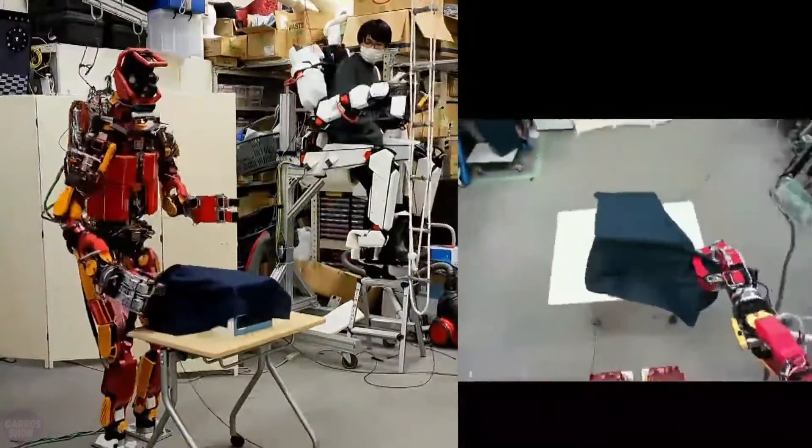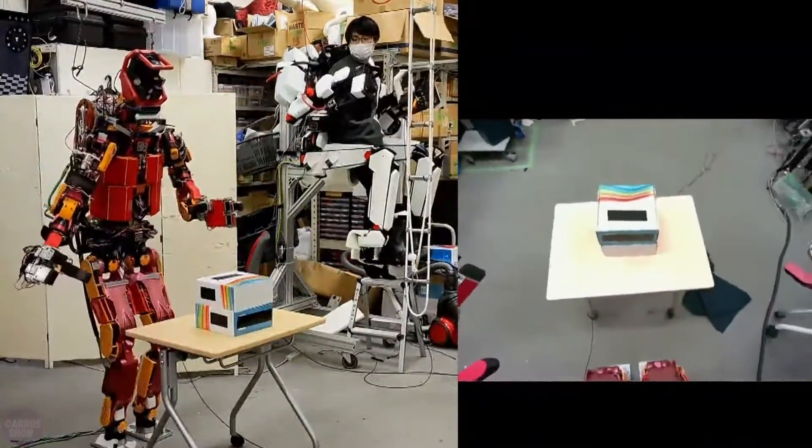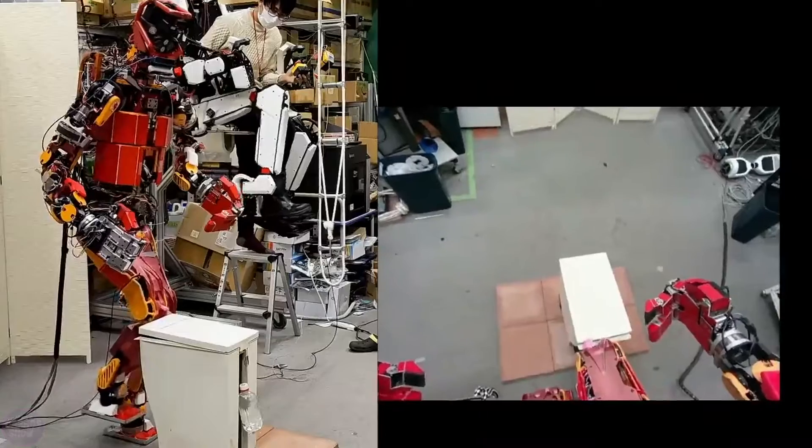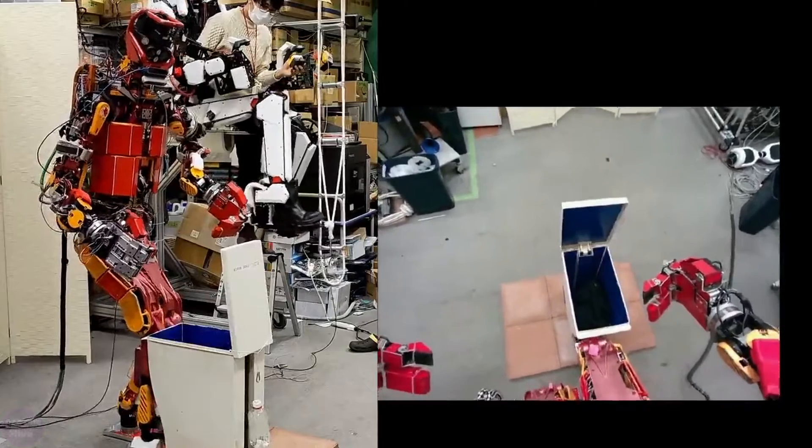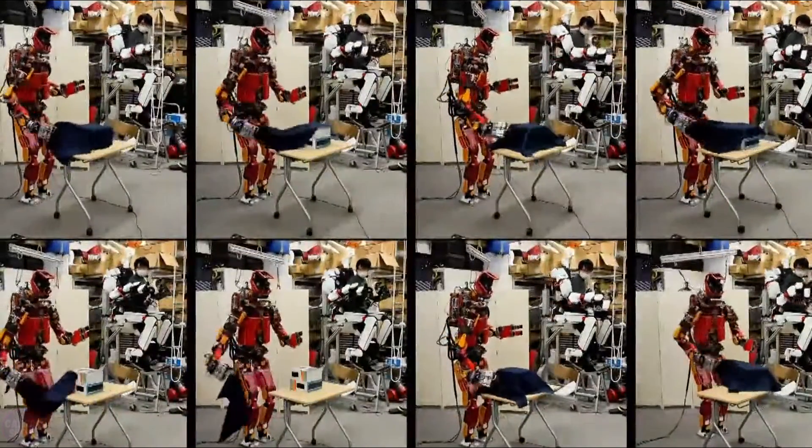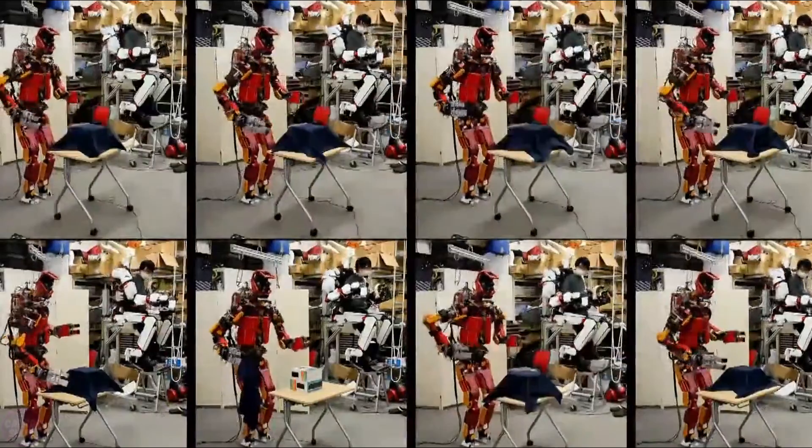Another student project showcased at the exhibition was a whole body imitation learning system for a humanoid robot. This approach is gaining popularity and is being used in major robotics companies. The concept involves a person using teleoperation to demonstrate tasks to the robot, which then replicates the actions, generalizing and applying the experience to similar tasks.